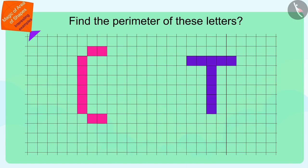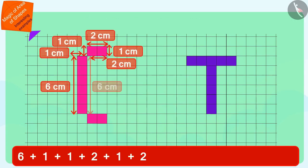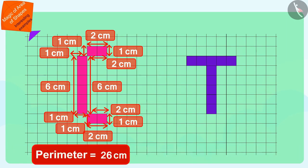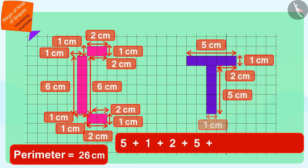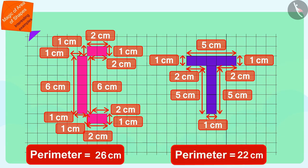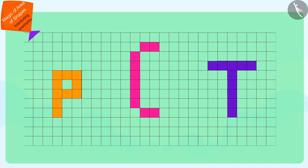Children, can you now find the perimeter of the letters of Chanda and Tufan? Yes, the perimeter of the letter C of Chanda is 26 centimeters and the perimeter of the letter T of Tufan is 22 centimeters.